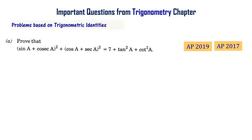Prove that (sin a + cosec a)² + (cos a + sec a)² = 7 + tan²a + cot²a.